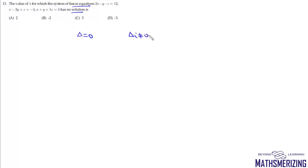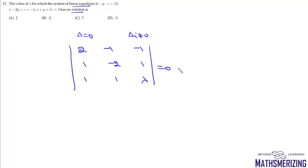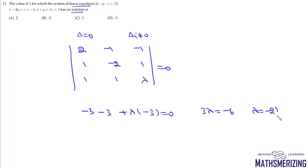Question 11: find λ such that the system of linear equations has no solution. A system has no solution when Δ = 0 and at least one of Δ₁, Δ₂, Δ₃ ≠ 0. Setting up the determinant with the coefficient matrix and expanding along the third row gives 3λ = −6, so λ = −2. That's option A (λ = −2).